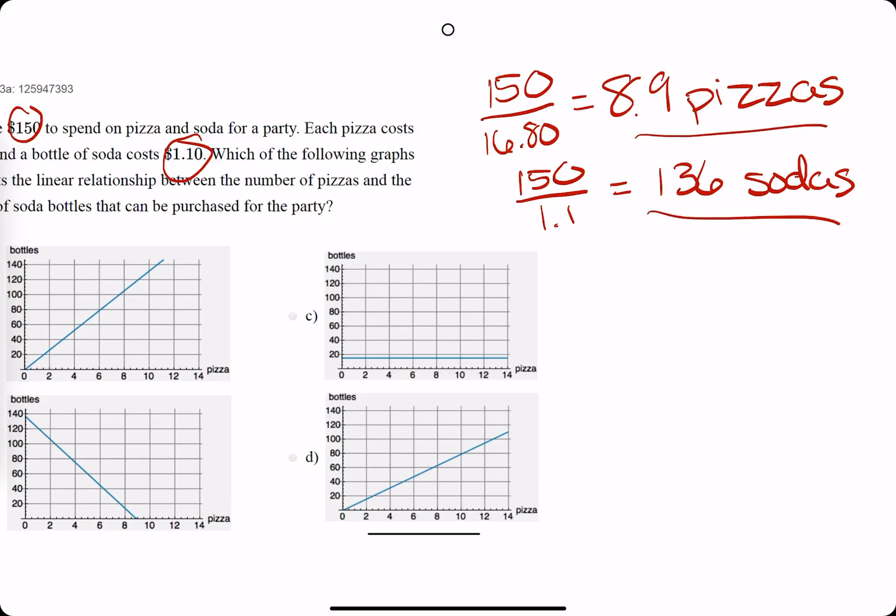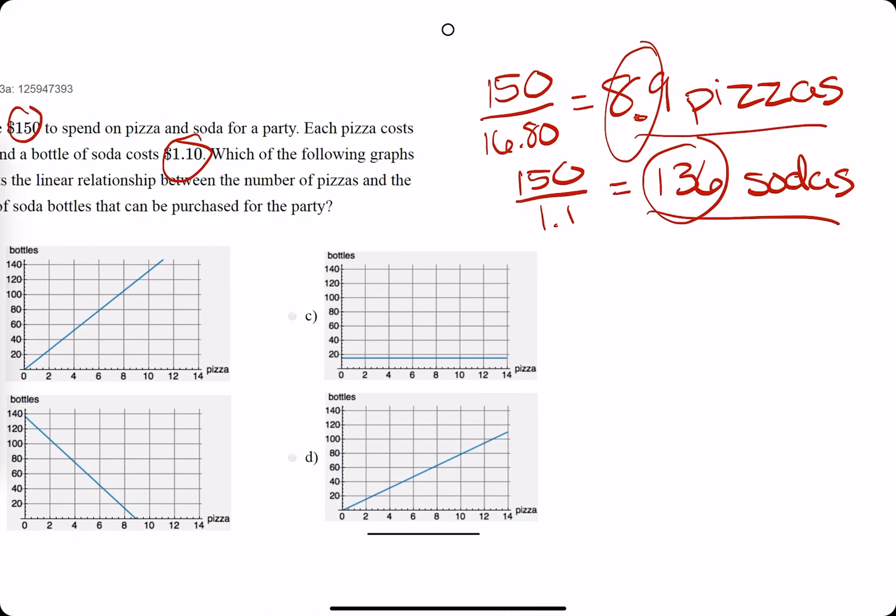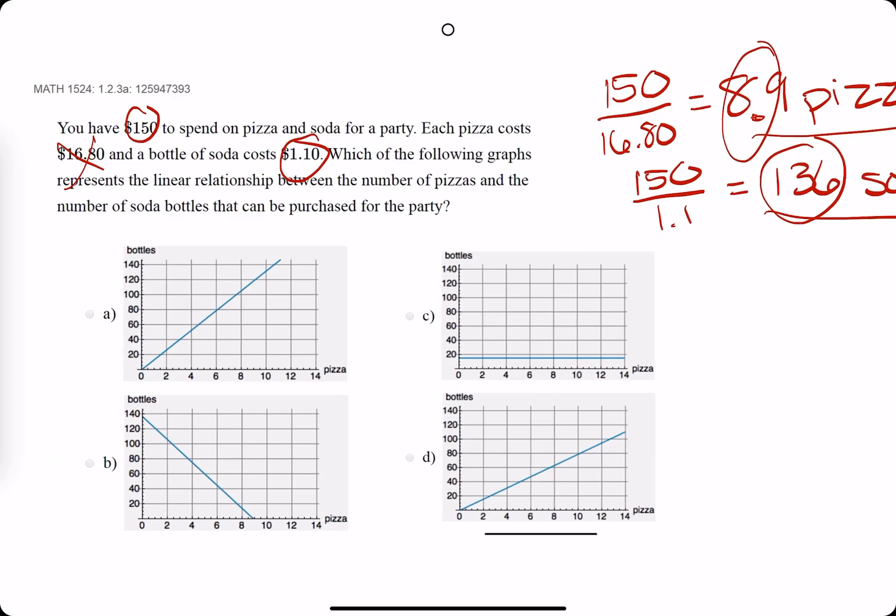Okay, so again what we're looking for is the pizza axis or sorry the pizza intercept to be 8.9 while the soda intercept will be 136. So if we're looking at our graphs, the only option that has the line crossing the pizza axis at 8.9 and the soda axis at 136.